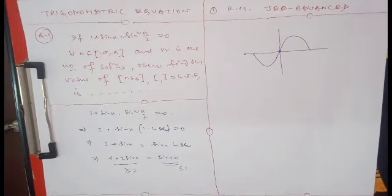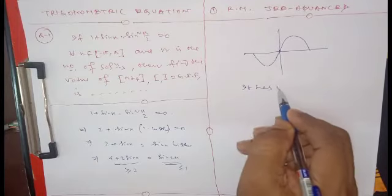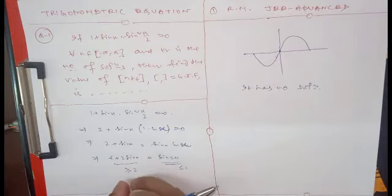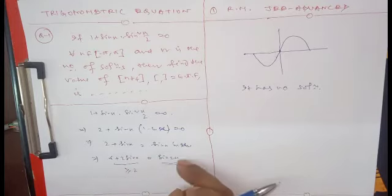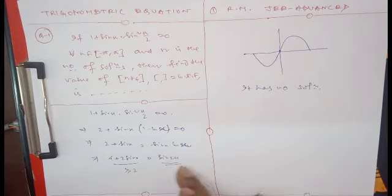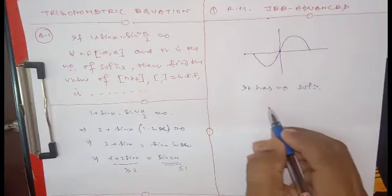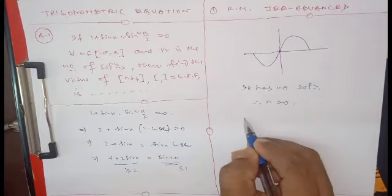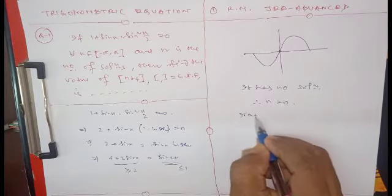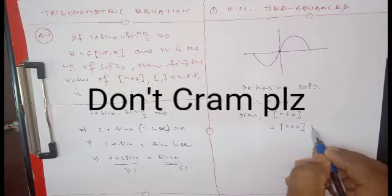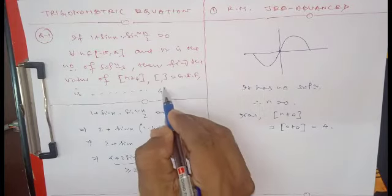Hence the equation has no solutions. The left-hand side ranges from 2 to 6, while sin(2x) only ranges from -1 to +1, so this equation can never be balanced. Since there are no solutions, n = 0. Therefore, the greatest integer of n + 4 = greatest integer of 0 + 4 = 4.